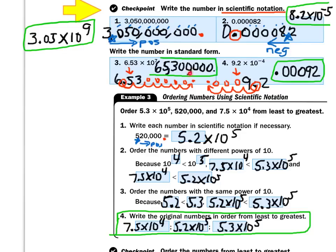I do expect you to put commas in large whole numbers. If you don't know how to place a comma, start at the decimal and count 1, 2, 3 back — put a comma; then 1, 2, 3 back again — put a comma. For number 4, I dropped the front number 9.2 down, looked at the negative 4 exponent, and moved the decimal 4 places back, adding 3 zeros in those empty swings. That gives me 0.00092.